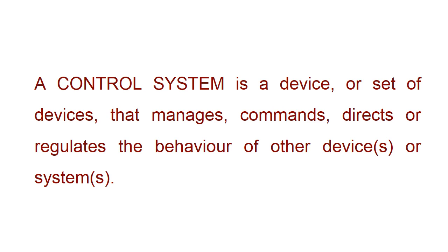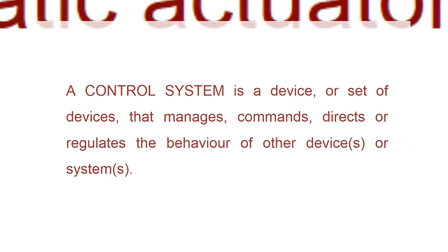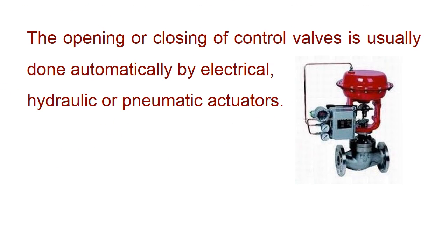A control system is a device, or set of devices, that manages, commands, directs, or regulates the behavior of other devices or systems. The opening or closing of control valves is usually done automatically by electrical, hydraulic, or pneumatic actuators.